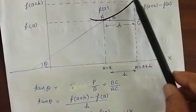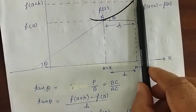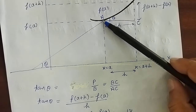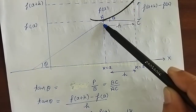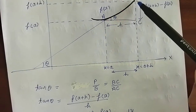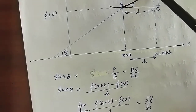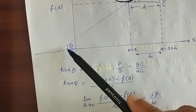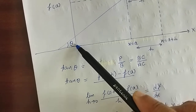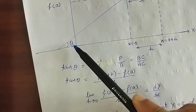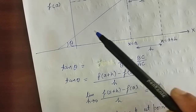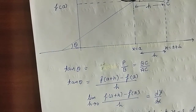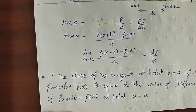जैसे जैसे h, 0 की तरफ tend होता है तो हम point A पर पहुँच जाएंगे, और AB जो है वो एक tangent का काम करेगा। x-axis पर इसे meet कराएंगे तो वहाँ भी angle theta बनेगा।